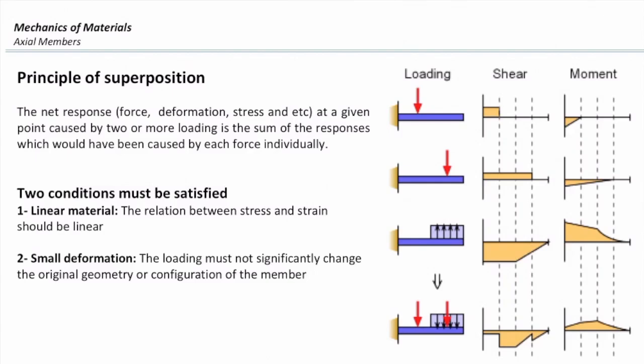The second criterion is small deformation: the loading must not significantly change the original geometry of the structure. In mechanics of materials, loads are within the capacity of the structure, and deformations are small compared to the dimensions of the structure. So both criteria are always satisfied, and we can always use the principle of superposition in mechanics of materials.